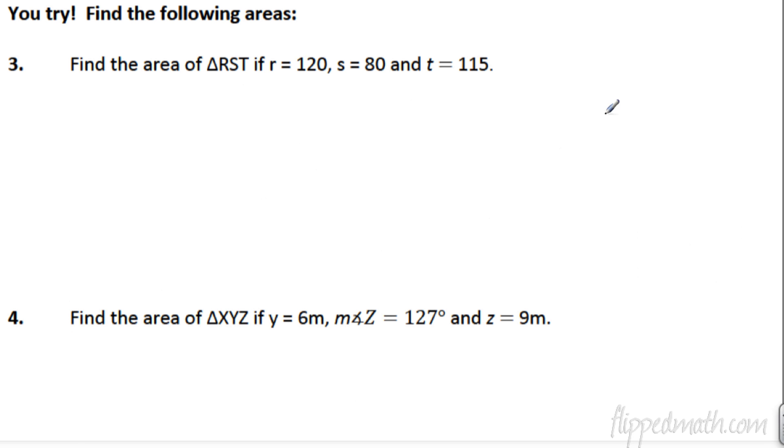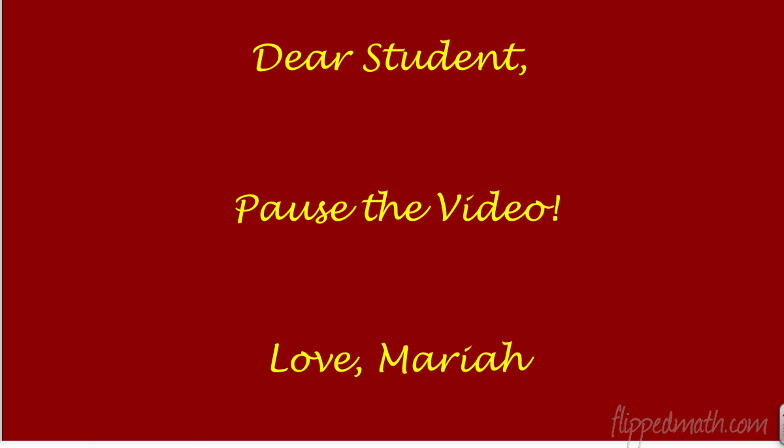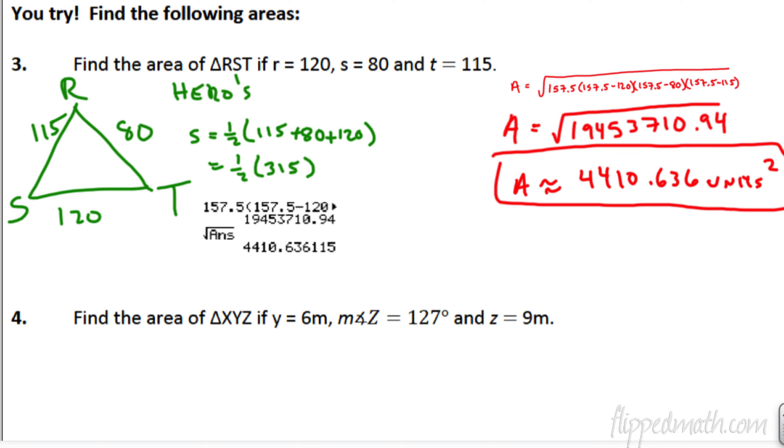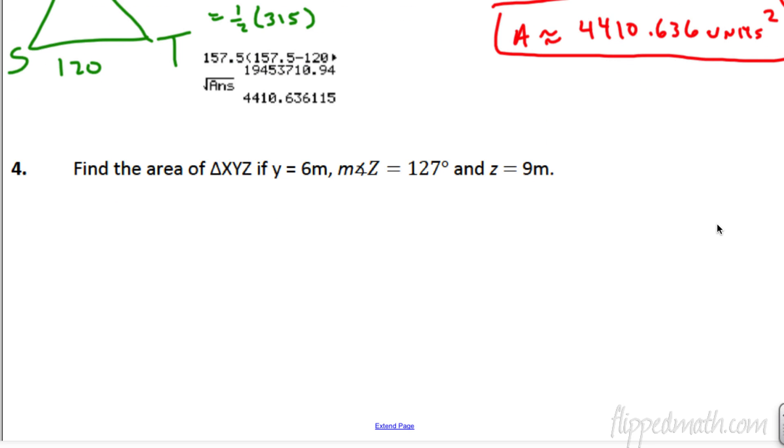So, you just have to figure out which formula to use. You try the next two, pause the video. Figure out 3 and 4. Let's look at the answer number 3 here. This is Hero's or Heron's formula. If you plug it all in, you get a semi-perimeter of 157.5. That's what S equals. So, you plug that in with the three sides. You get 4,410.636 square units.